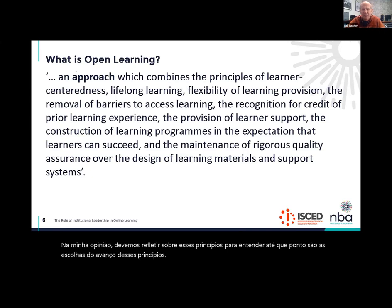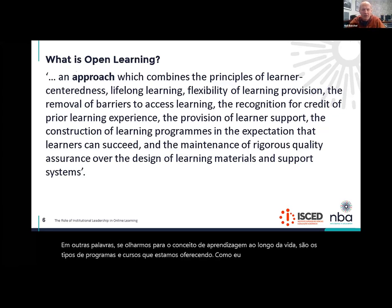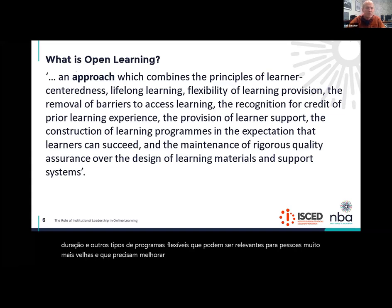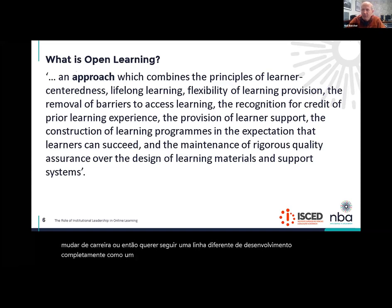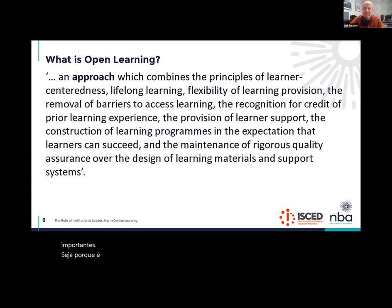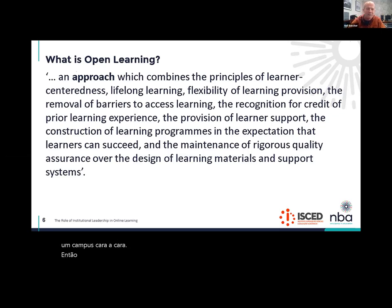For example, if we look at the concept of lifelong learning — are the kinds of programs and courses we're offering only relevant to people at the beginning of their working careers? Or are we also offering short courses and other flexible programs that might be relevant to people who are much older and either needing to upgrade their skills and competences, wanting to shift careers, or wanting to pursue a different line of development altogether? When we think about provision of learner support, in online learning particularly this is one of the most critically important factors, because it's very easy to deploy online learning programs, but providing effective learner support gets much more complicated than it is when we have people on a face-to-face campus.